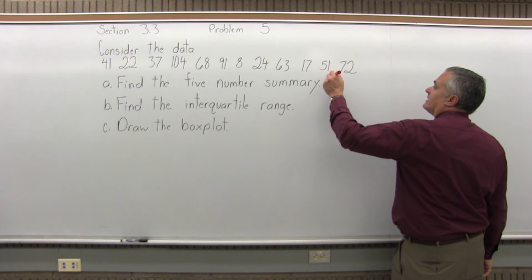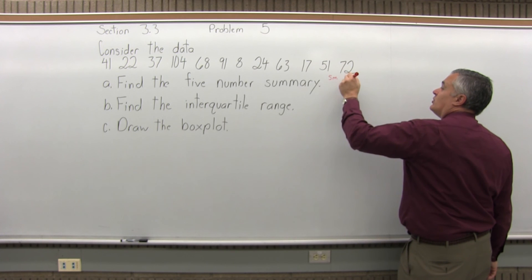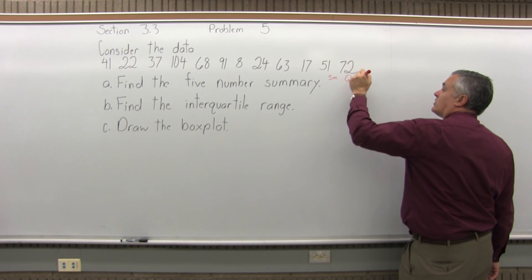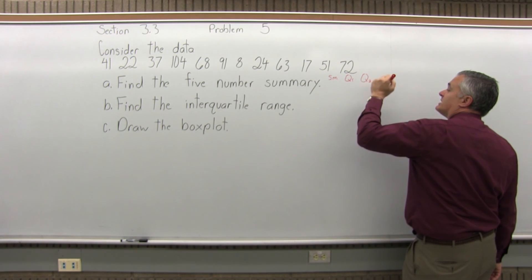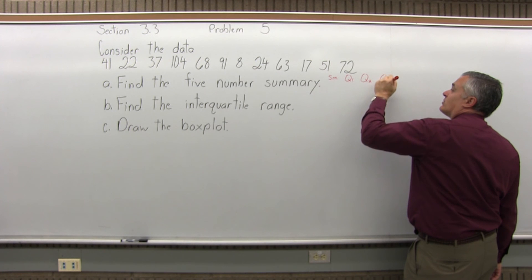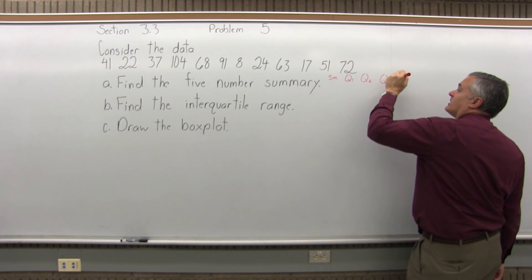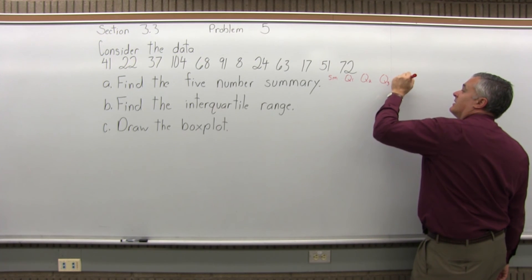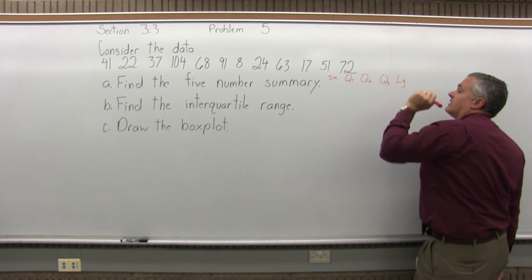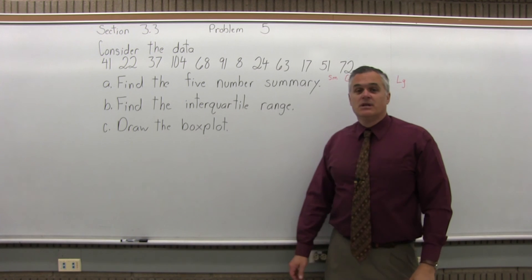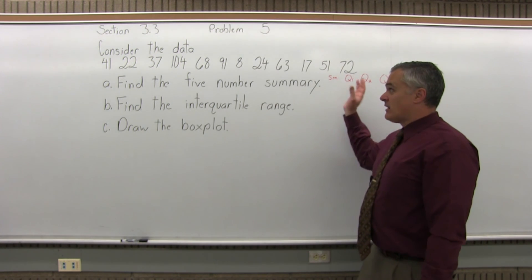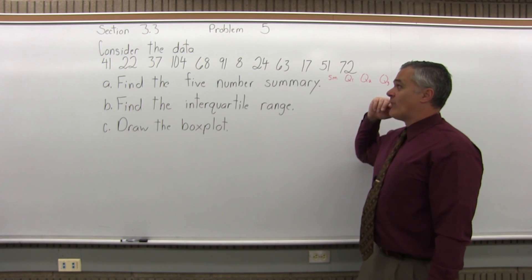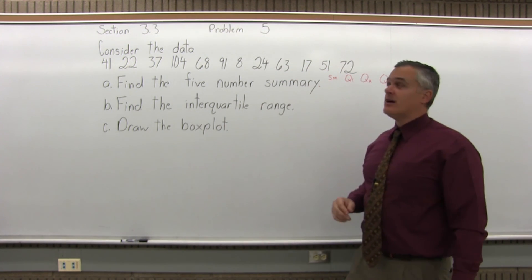For the five-number summary, we want to find the smallest data value, Q1 the first quartile, Q2 the second quartile, Q3 the third quartile, and the largest data value. In order to find that, we have to put our list of numbers in order — what they would call ranking the data.